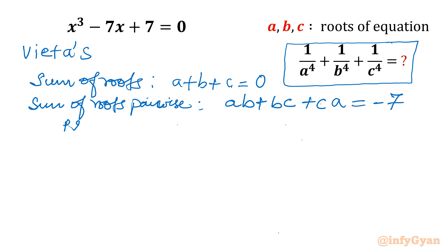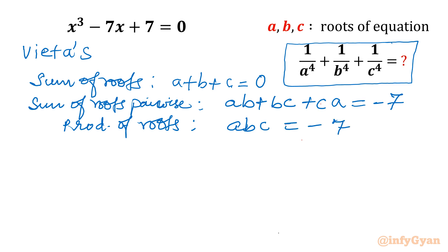The product of roots equals minus the constant coefficient over the coefficient of x³. The constant is 7 and the leading coefficient is 1, so abc = minus 7. So our three key equations are: a + b + c = 0, ab + bc + ca = -7, and abc = -7.